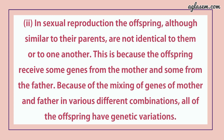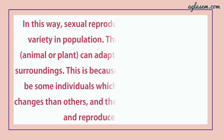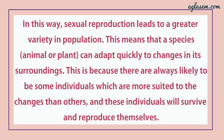In sexual reproduction, the offspring, although similar to their parents, are not identical to them or to anyone. This is because the offspring receives some genes from the mother and some from the father. Because of the mixing of genes of mother and father in various different combinations, all of the offsprings have genetic variation. In this way, sexual reproduction leads to greater variety in the population, meaning a species — animal or plant — can adapt quickly to changes in its surroundings.